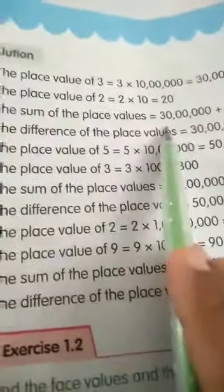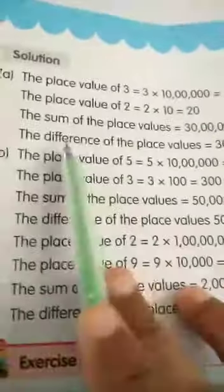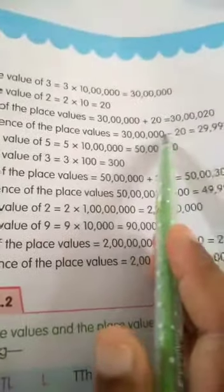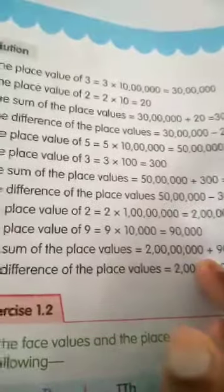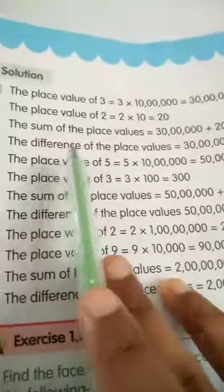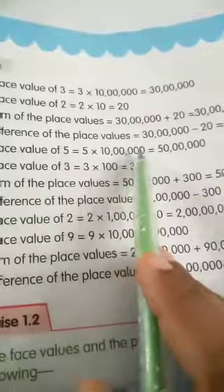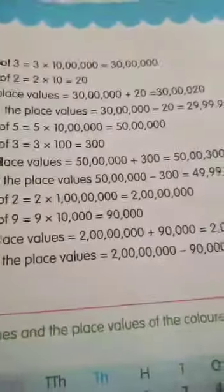The sum of the place values is 30 lakhs + 20 = 30,00,020. The difference of the place values is 30 lakhs − 20 = 29,99,980. So we used both addition and subtraction to find the sum and difference of the place values.